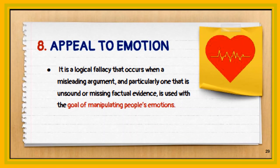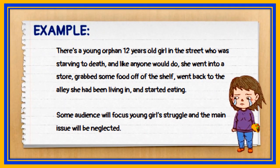The eighth logical fallacy is the appeal to emotion. It is a fallacy that occurs when a misleading argument — particularly one that is unsound or missing factual evidence — is used with the goal of manipulating people's emotions. For example, a 12-year-old orphan girl starving in the street went into a store, grabbed some food, and went back to the alley she had been living in. Some audiences will focus on the young girl's struggle, and the main issue will be neglected.